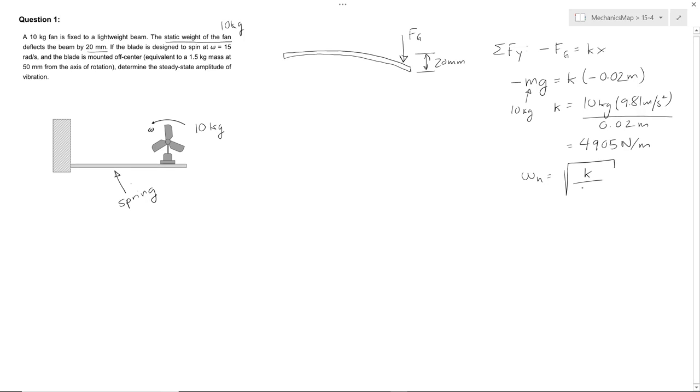square root of k over m equals the square root of 4,905 newtons per meter divided by 10 kilograms, the mass of the fan. And we find that's equal to 22.15 rads per second.